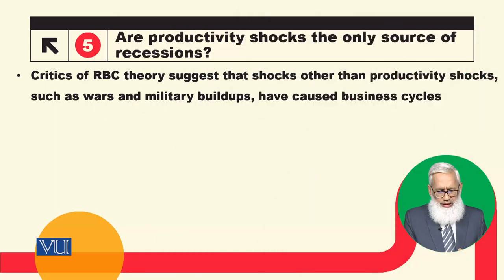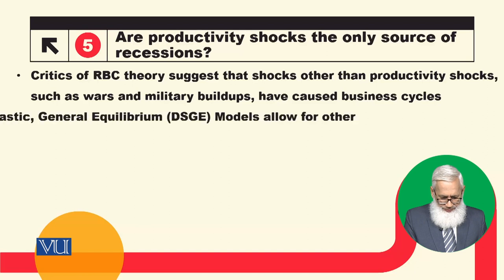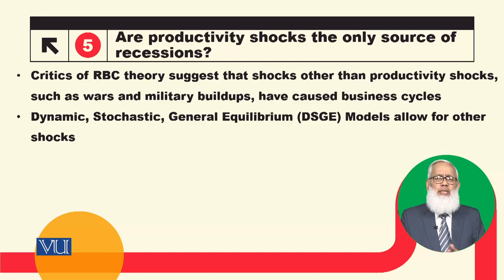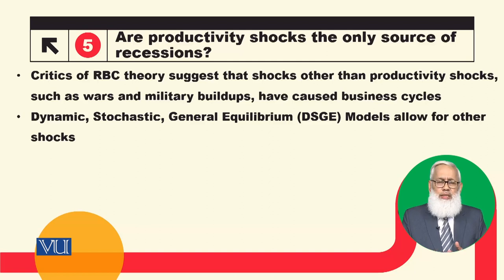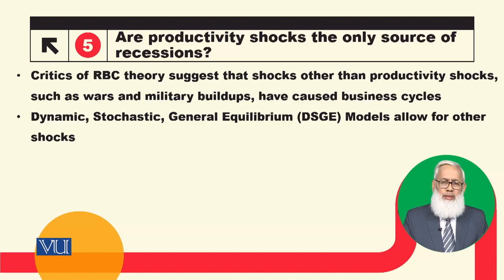Critics of RBC theory suggest that shocks other than productivity shocks — such as wars and military build-ups — have caused business cycles. Classical school economists have a broader definition of productivity shocks, and this broader branch is called Dynamic Stochastic General Equilibrium Models, because in RBC only productivity shocks are the major source.